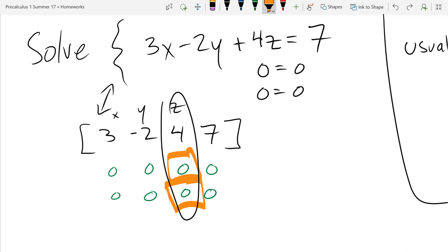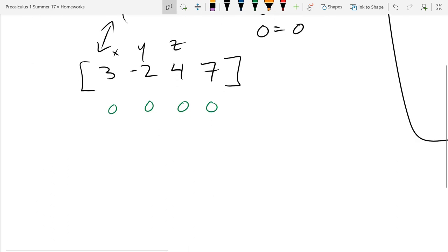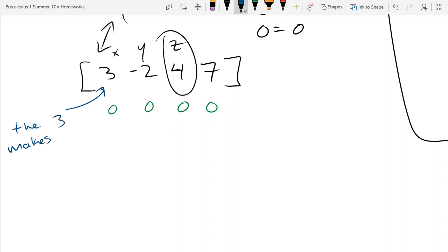So let me erase this off of here. We don't really need these extra rows. So this means z is free. Now yes there is a number below z, but really that number locks down the x. It's the first non-zero number here. So it makes the x variable non-free.